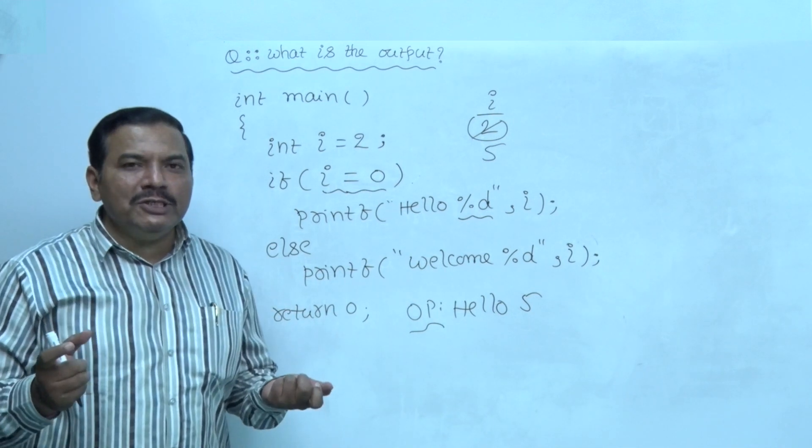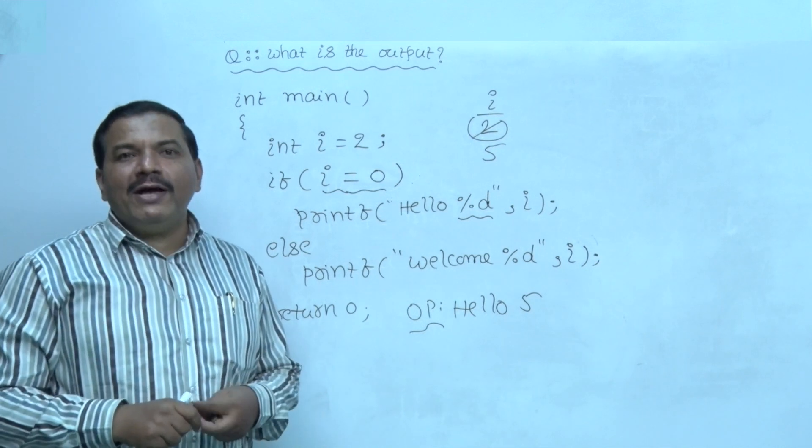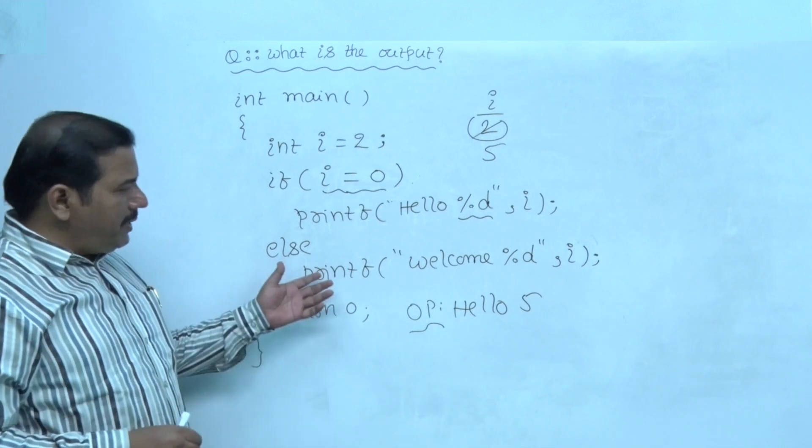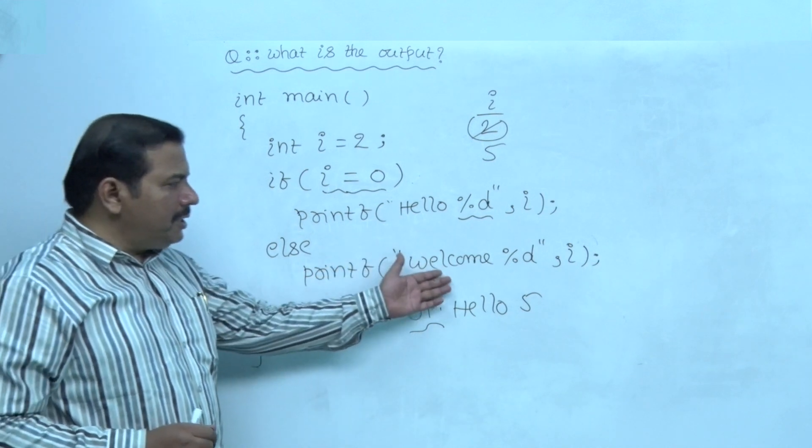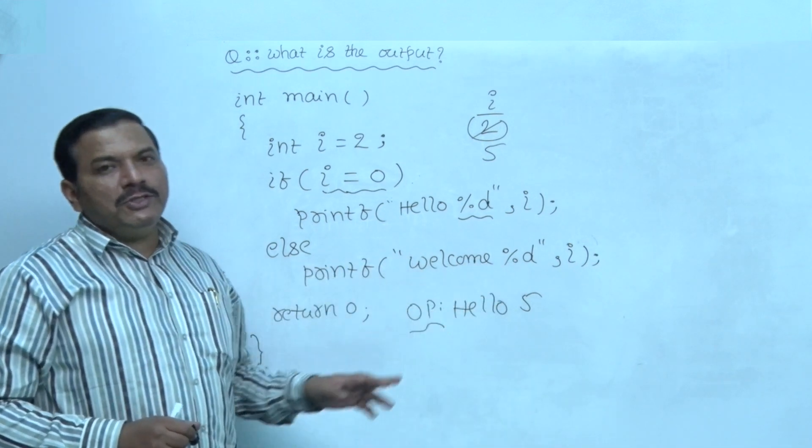If left side operand value is 0, the test expression evaluates as false. The code inside else block is executed. Welcome, i value 0 is printed.